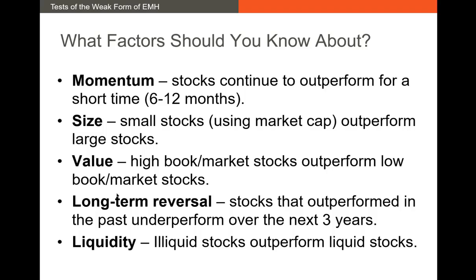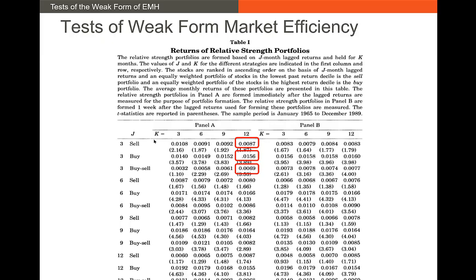Let's take a look at some of these anomalies — I want to talk about five of them, starting with the momentum anomaly. Momentum essentially says that stocks continue to outperform for a significant short-term period, usually three to twelve months. What we see here are two sets of time periods: three, six, nine, and twelve months on the vertical and on the columns. The J values tell us how long the return period lasted prior to portfolio sorting. Researchers sort different stocks into portfolios based on their returns over the past three, six, nine, or twelve months.